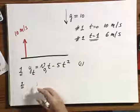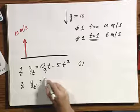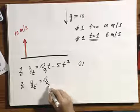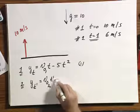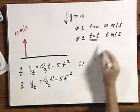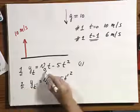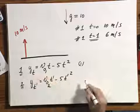For object number two, I have y t prime equals v zero two times t prime minus five t prime squared. Where the prime indicates that it is one second later than t, it's not the same time, and the two refers to object number two, and the one refers to object number one.